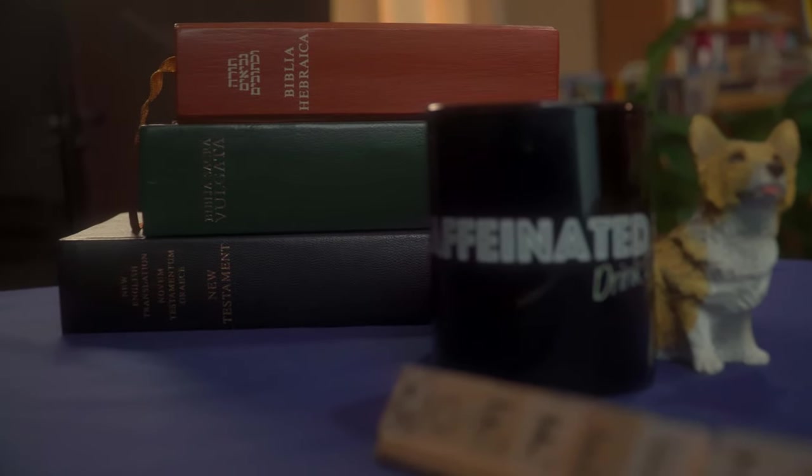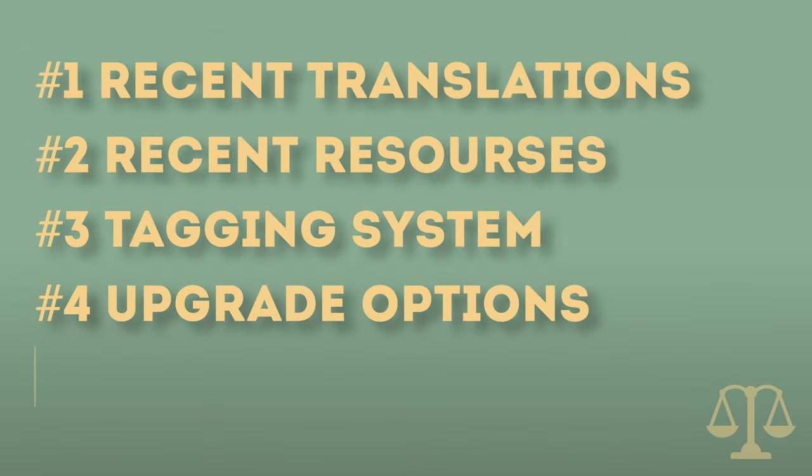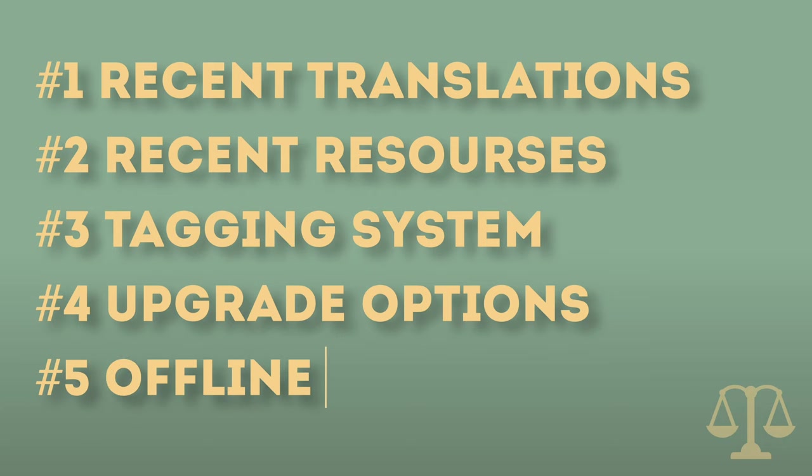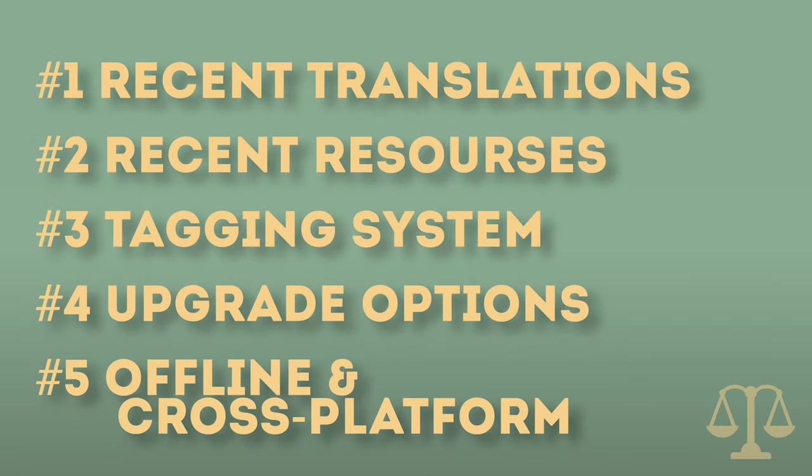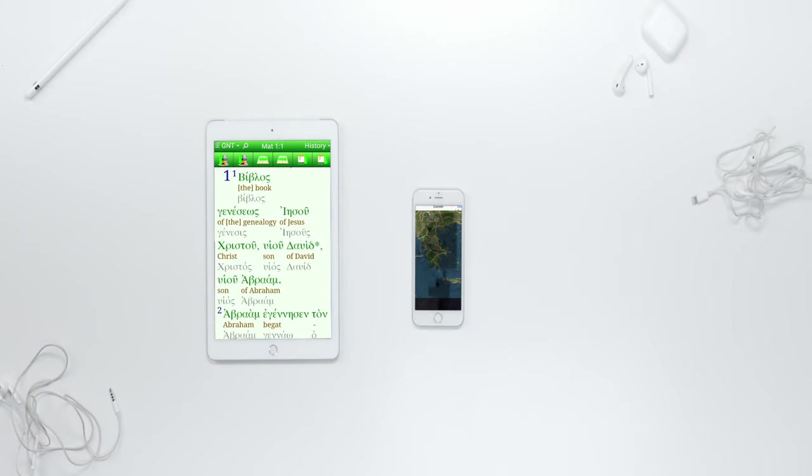The big three — Accordance, Logos, and Olive Tree — all offer free or trial versions with extensive upgrade options. Do the packages I'm going to discuss today have upgrade options to get more recent or better resources? Fifth, the software needs to be available offline. Can you download it and use it without being connected to the internet? And related to this, I'm looking to see if this software runs on Macs, PCs, as well as smartphones and tablets. What really surprised me in doing this study is just how cross-platform compatible so many of these free software packages are — so kudos to their developers.